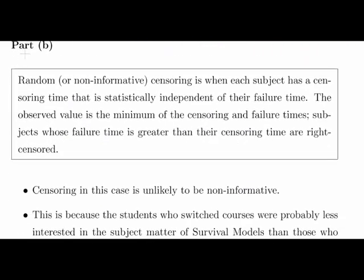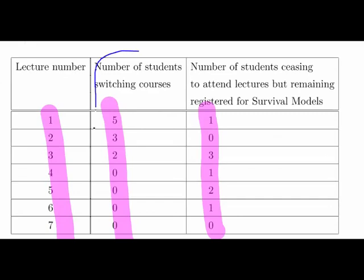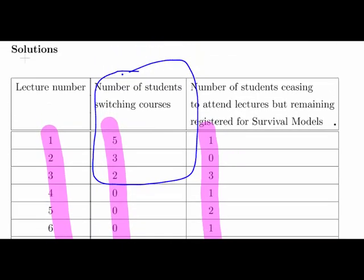Now the question is, the second question is about the non-informative censoring. So it's about these students who switch out. So we get a bunch of students switching out in the first three classes. And explain whether the censoring in this example is likely to be non-informative. You know in your heart it's not. They're making excuses. They find the lecture boring. But they want to be polite about it. So they make up a story that they're going to register for something else, like time series, to feel it might be easier, or something like that.